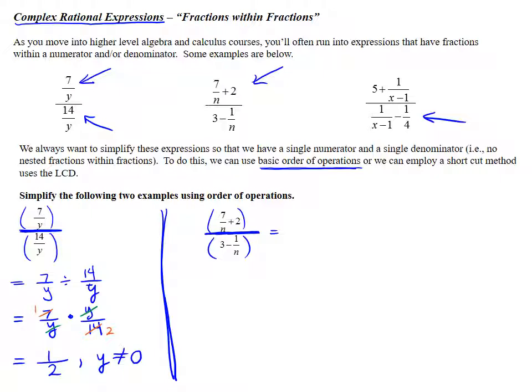I'm going to rewrite this as 7 over n plus 2 divided by 3 minus 1 over n. Now notice the grouping symbols here. Before we can do the division, we must perform the calculations inside the parentheses. So to add 7 over n and 2, I would need a common denominator.